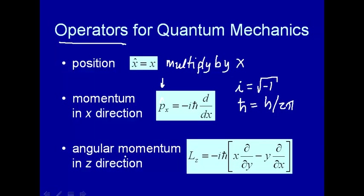The third important operator is the angular momentum operator in the z-direction. This should have an operator hat above it — it's minus i h-bar — and this comes from translating linear momentum into circular motion, giving you a cross product. Angular momentum L as a vector is r cross p, so r just translates into multiply by r, but p contains the motion term, and that's where you get those partial derivatives.